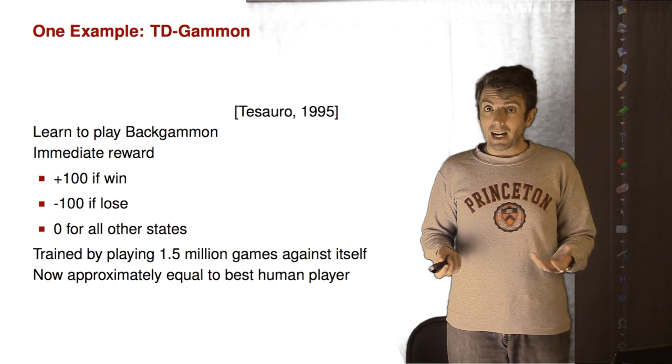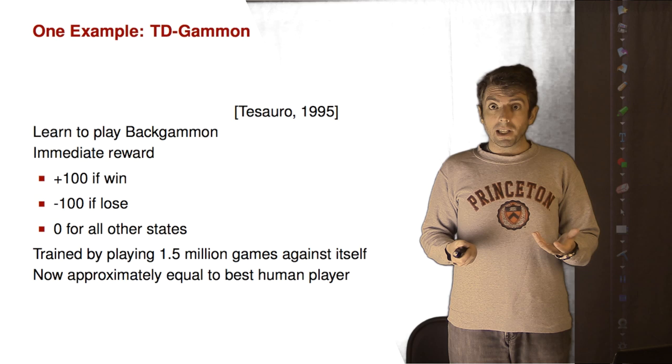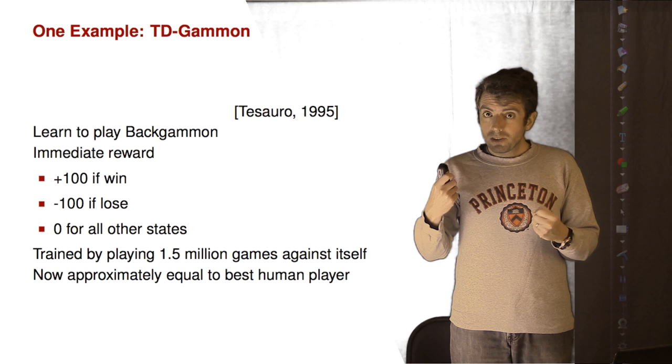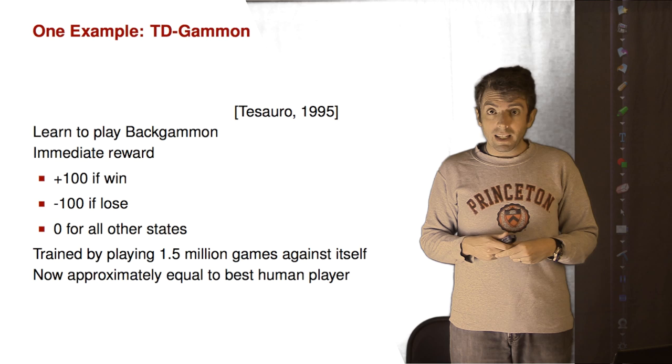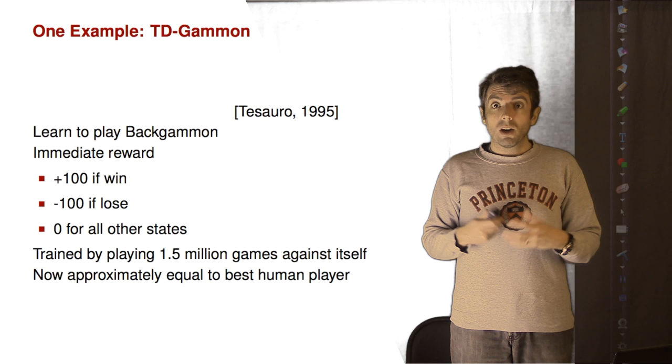One of the earliest successes of reinforcement learning was to play games. And one game in particular was backgammon. And Gary Tesauro in the mid-90s created an agent that could play backgammon. And he used reinforcement learning to learn how to do this, and it could beat almost all the best backgammon players in the world just by playing itself and exploring the different configurations you can reach in a game of backgammon.